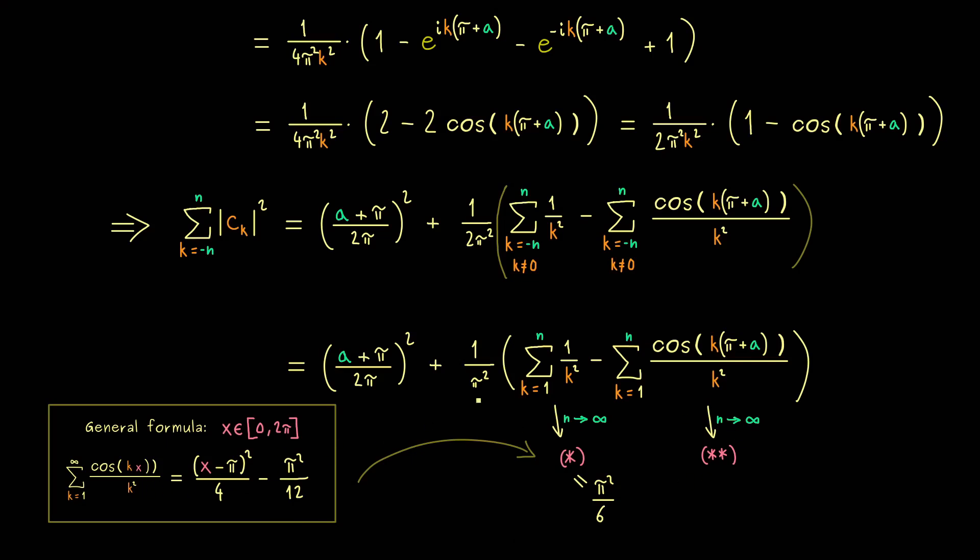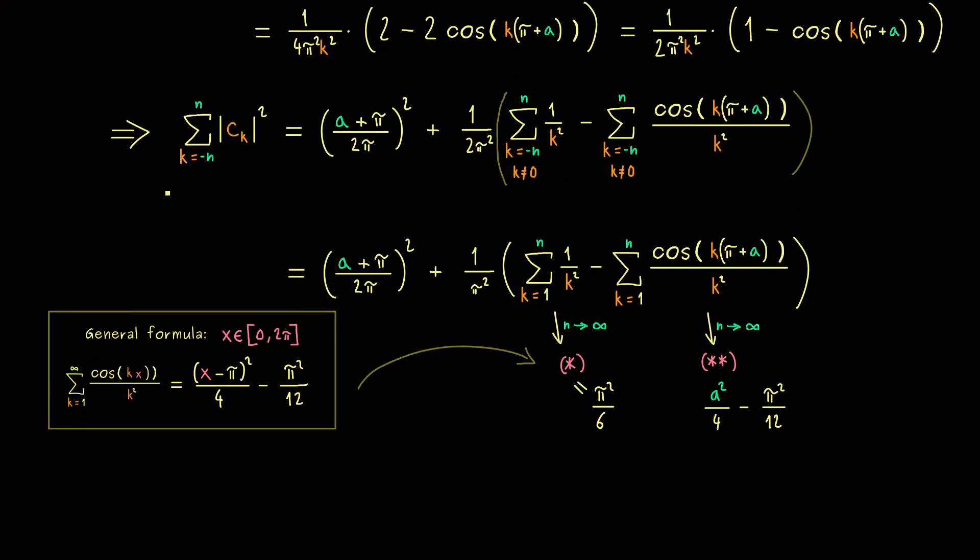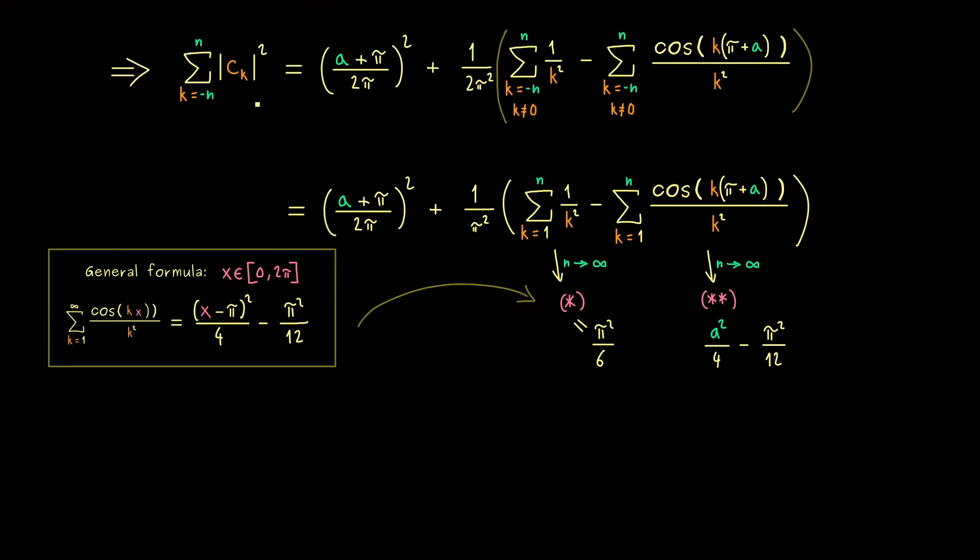And on the other hand, for 2 star, we have that this x is equal to pi plus a. So the first term here is a squared over 4. And the second just remains as it is. So these are the limits we need. And now we can just put them into our limit for the c case.